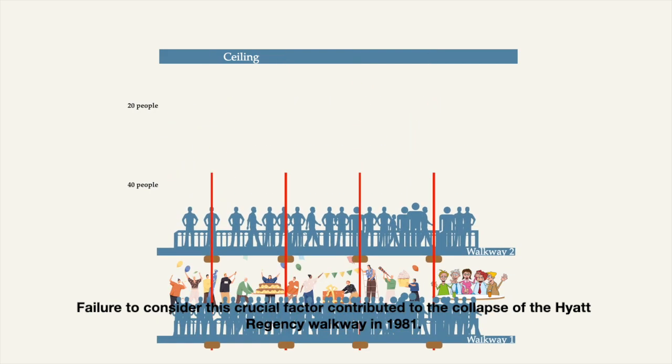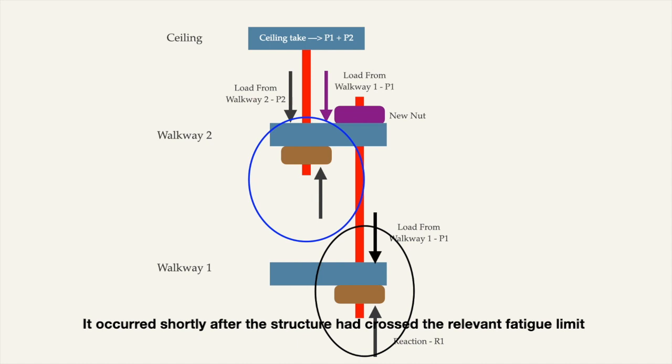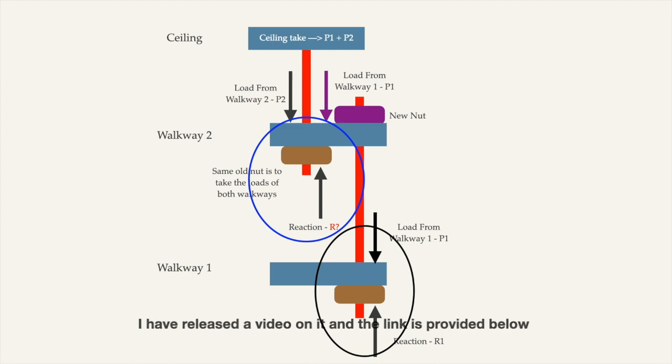Failure to consider this crucial factor contributed to the collapse of the Hyatt Regency Walkway in 1981. This occurred shortly after the structure had crossed the relevant fatigue limit. I have released a video on it and the link is provided below.